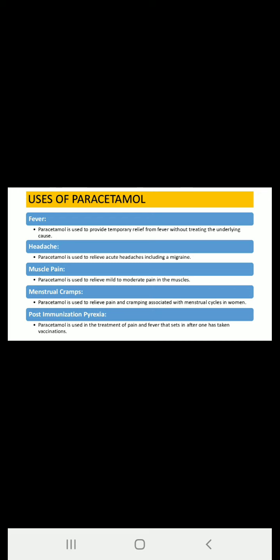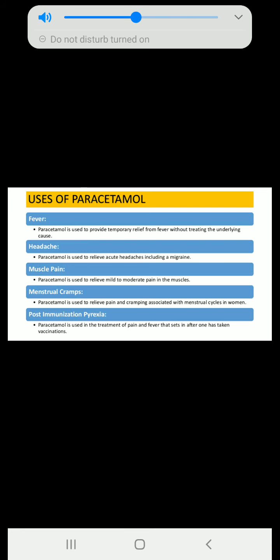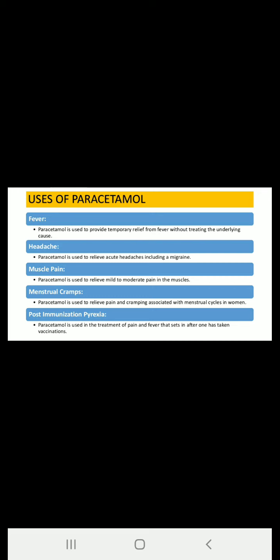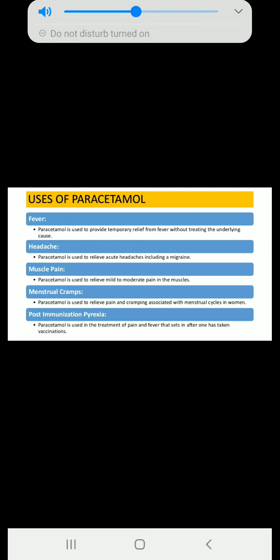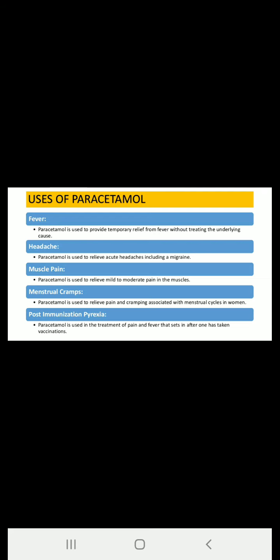Menstrual cramp is the fourth indication where paracetamol is applicable. Paracetamol is used to relieve pain and cramping associated with the menstrual cycle in women. Whenever a woman is suffering from any kind of menstrual cycle pain, paracetamol treatment or a painkiller is given to get rid of that pain.